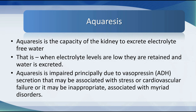First I want to start with a term you may not be familiar with: aquaresis. This is the capacity of the kidney to excrete electrolyte-free water. When electrolyte levels are low they are retained and water is excreted. Aquaresis is impaired principally due to vasopressin — antidiuretic hormone — secretion that may be associated with stress or cardiovascular failure, or it may be inappropriate, associated with myriad disorders.